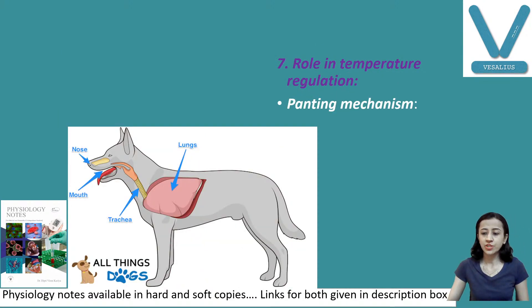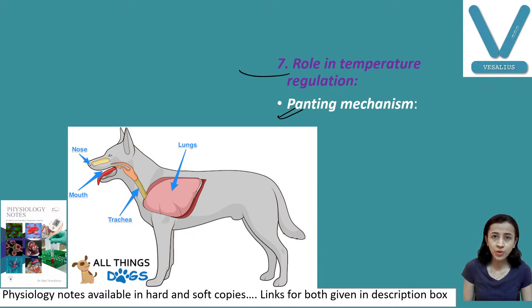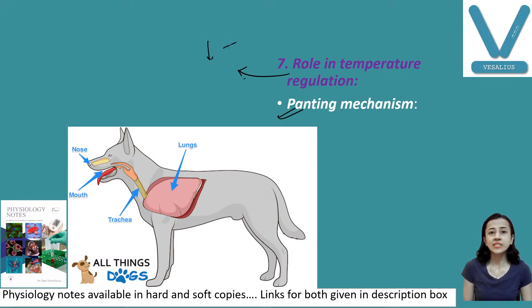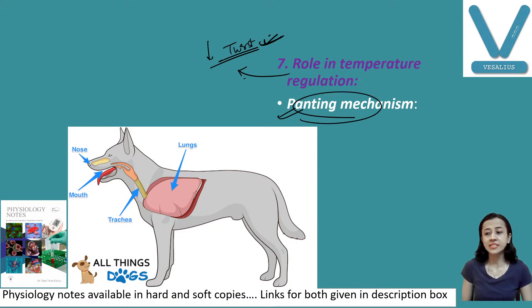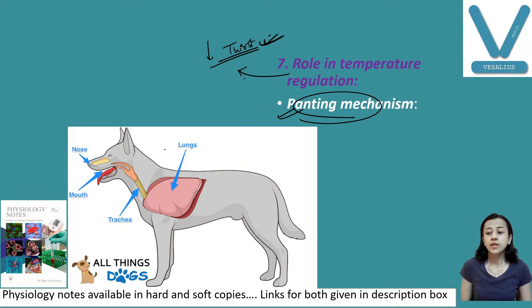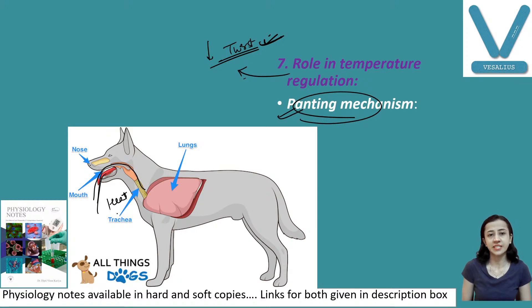Seventh is temperature regulation. When there is dehydration in human beings — and this is more important in animals — when temperature increases or dehydration occurs, salivary secretion decreases and we feel thirsty, which regulates body temperature as we then take fluid. In animals, the panting mechanism works by drooling saliva, which evaporates heat, and this is how these animals regulate their temperature.